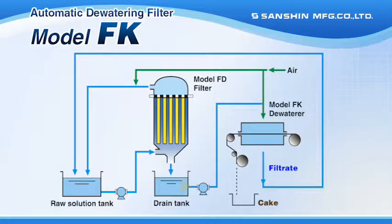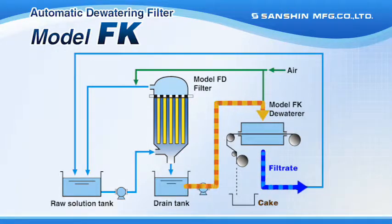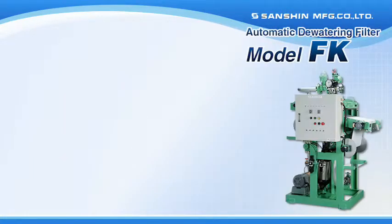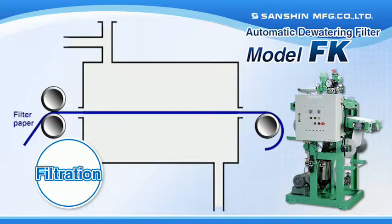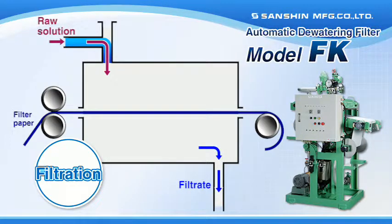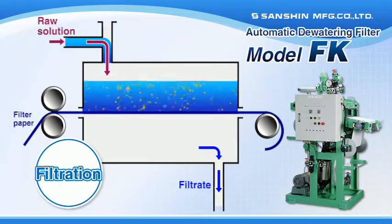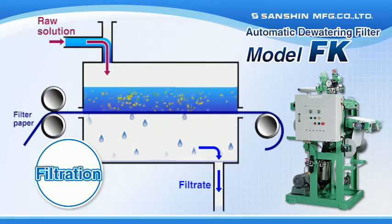Let's now take a look at the filtration, dewatering, and discharge processes of the automatic dewatering filter model FK. Belt-shaped filter paper is automatically fed to the filter media chamber, and pressure filtration involving the injection of raw solution from the top of the chamber is performed.